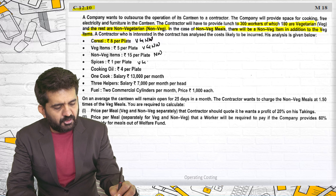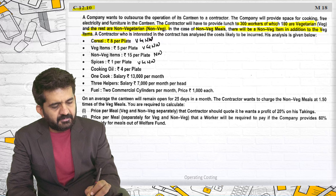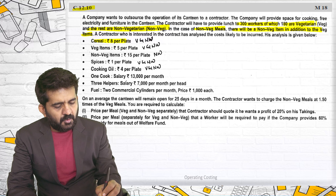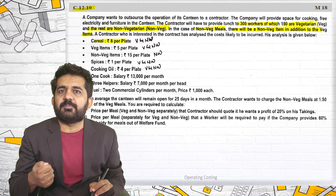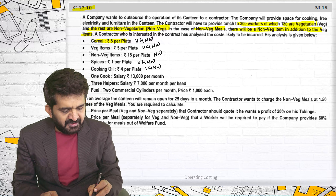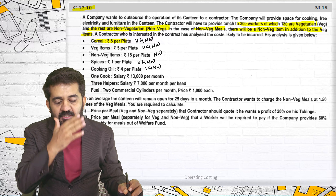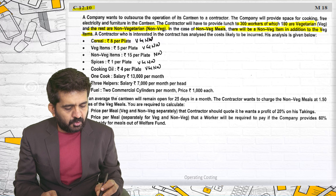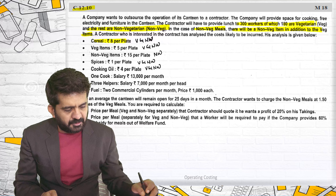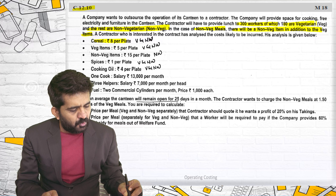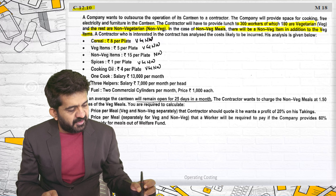Spices apply to both veg and non-veg. Cooking oil also for both. One cook salary ₹13,000 per month, who will cook both items. Three helpers at ₹7,000 per month per head. Fuel: two commercial cylinders per month at ₹1,000 each. On average, the canteen will remain open for 25 days in a month.